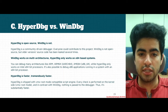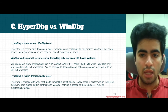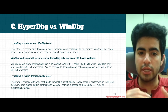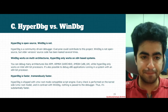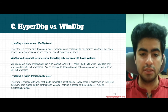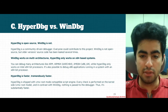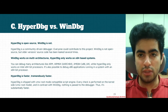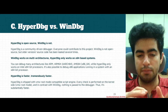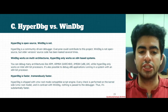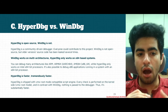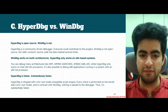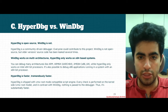Another difference: HyperDBG is a community-driven, open-source debugger where everyone can contribute, while WinDBG is not open source. WinDBG works on multiple architectures including ARM and AMD processors, while HyperDBG currently only supports Intel x64 processors — though you can debug x86 or 32-bit programs using HyperDBG. HyperDBG is also tremendously faster than WinDBG because it uses a VMX root mode compatible script engine where everything is performed in the kernel — thousands of times faster. There is also an academic paper comparing HyperDBG with WinDBG and demonstrating this speed advantage.